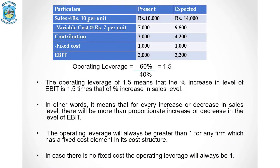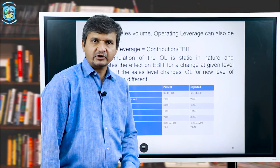Operating leverage = 60% ÷ 40% = 1.5. This means if sales increases by 1%, EBIT will increase by 1.5%. Whenever there is fixed cost in the cost structure, there will be a more than proportionate increase or decrease in EBIT. Thumb rules: operating leverage will always be greater than 1 for any firm that has a fixed cost element; if there is no fixed cost, operating leverage will always be 1.